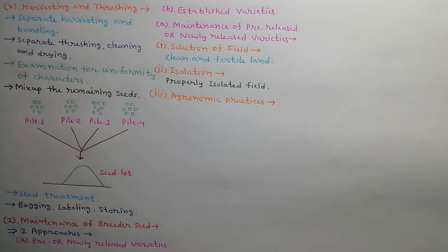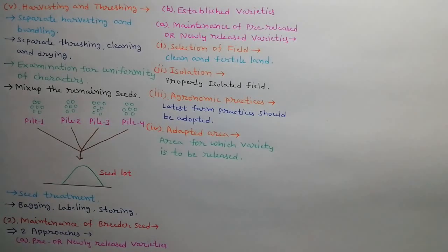Third step is agronomic practices. Latest farm practices in sowing, raising and harvesting must be adopted to raise a good crop. Fourth step is adapted area. Breeder seed must be produced at experimental station of that area for which variety is to be released.